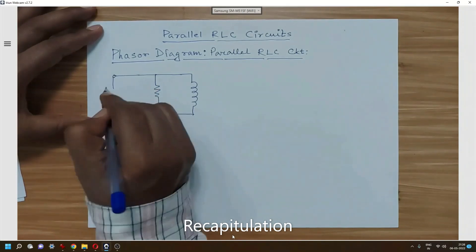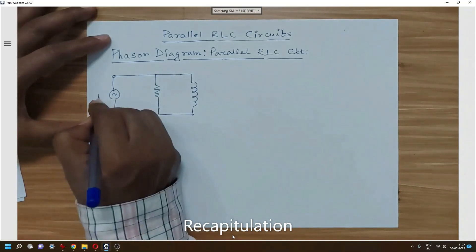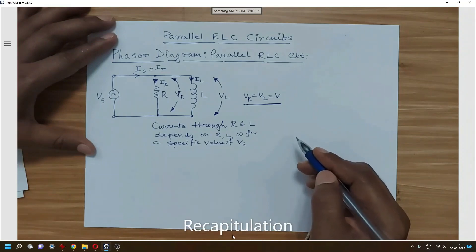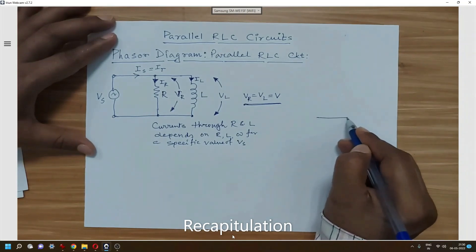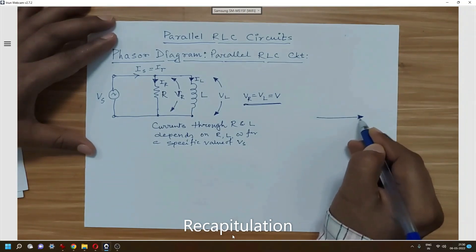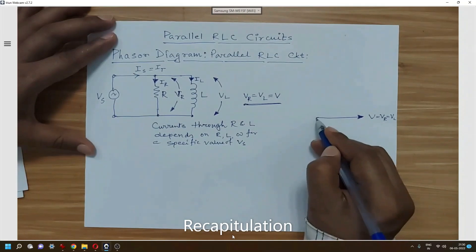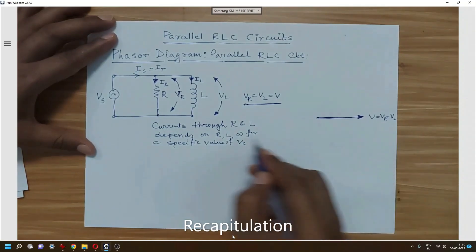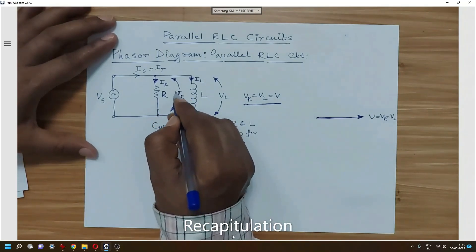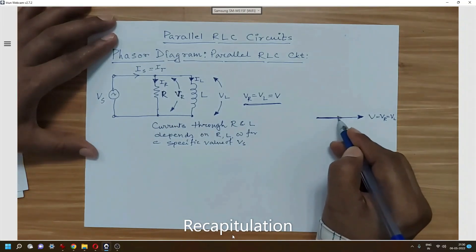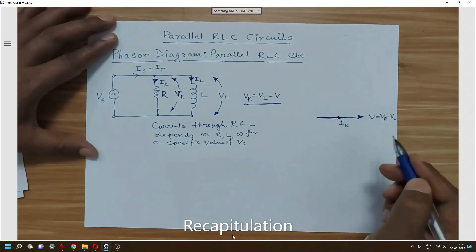Let us consider first a two-element RL parallel circuit excited by a supply voltage Vs. Since the voltage is the same for all elements, we will take the voltage phasor as the reference. So V = VR = VL. For a resistive circuit, the current through the resistor and the voltage across the resistor are in the same phase, so we will draw IR in the same direction as VR.